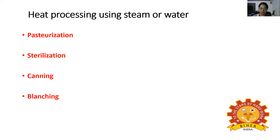Heat also alters or destroys the compounds of food that are responsible for their individual flavour, colour, taste or texture, and as a result, they are perceived to have a low quality and of lower value. Heat processing using steam or water is the first section that comes under general thermal processing. The heat processing methods used include pasteurization, sterilization, canning and blanching, which will be covered individually in the upcoming slides.